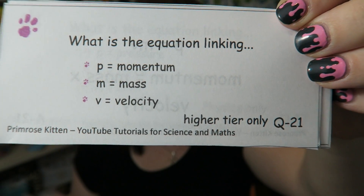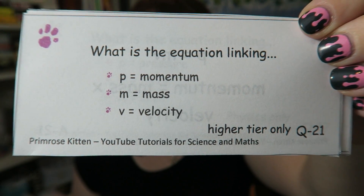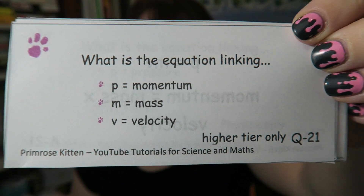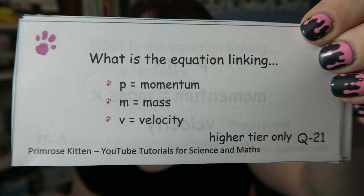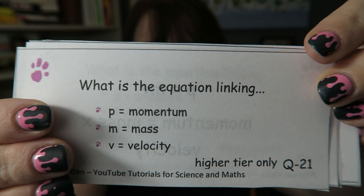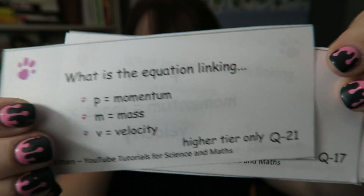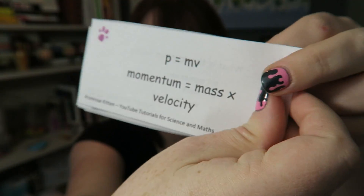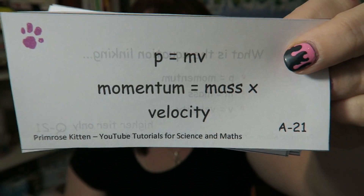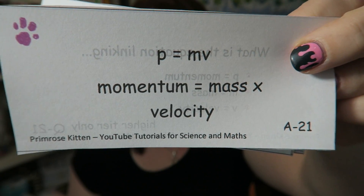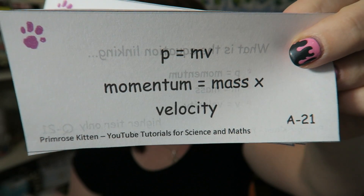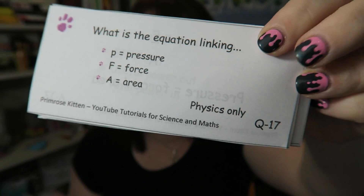This one is for higher tier only. What is the equation linking momentum, mass, and velocity? Momentum equals mass times velocity.